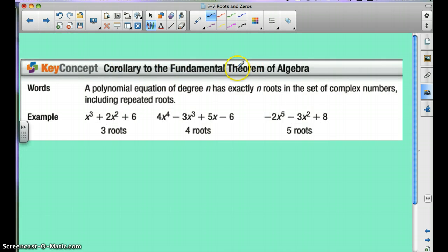So the corollary to the fundamental theorem of algebra is the polynomial equation of degree n has exactly n roots. And a lot of you are picking up on that already in the past section in the set of complex numbers, including repeated roots. So here's some examples if you want to write that down.